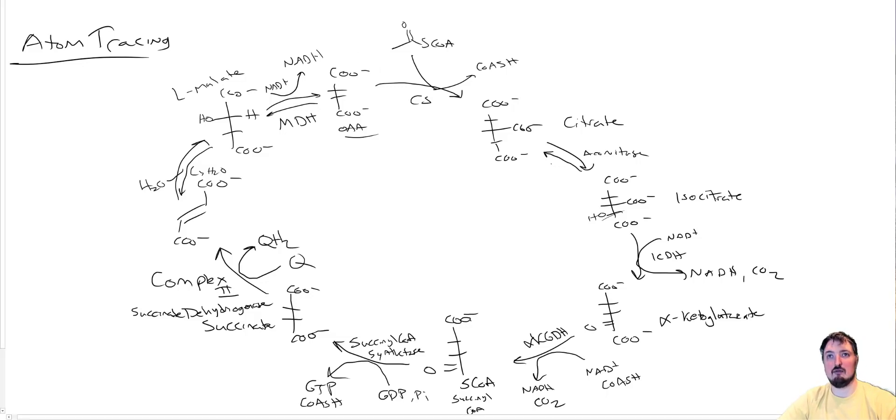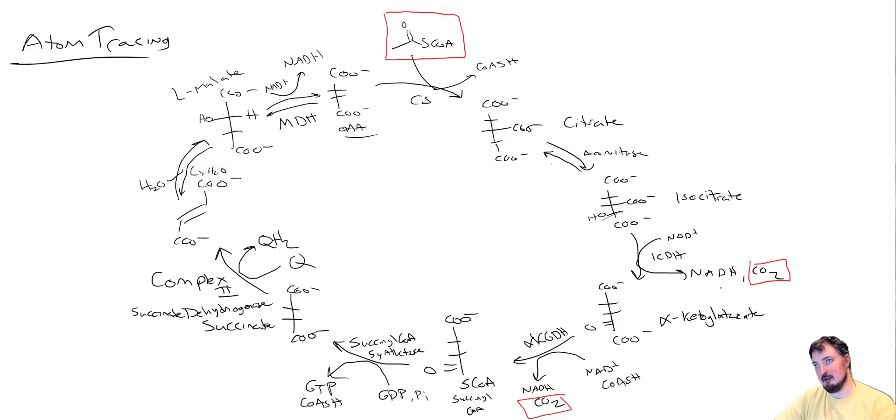Remember that what's going on here is we're taking two carbons in through acetyl-CoA and we're losing them in two sequential steps throughout. So either one of those two carbons that comes in is going to eventually be lost, because we're two atoms in, two atoms out. We're carbon neutral in this cycle. So if you're running just on acetyl-CoA, everything is going to come in relatively evenly.